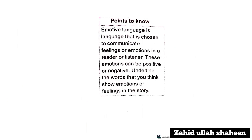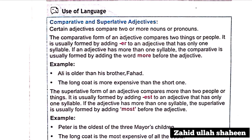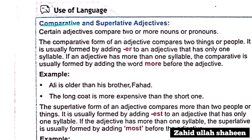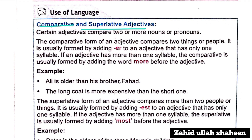Emotive language is a language that is chosen to communicate feeling or emotion in the reader or listener. This emotion can be positive or negative. Now, the comparative degree: the adjective compares two or more things.